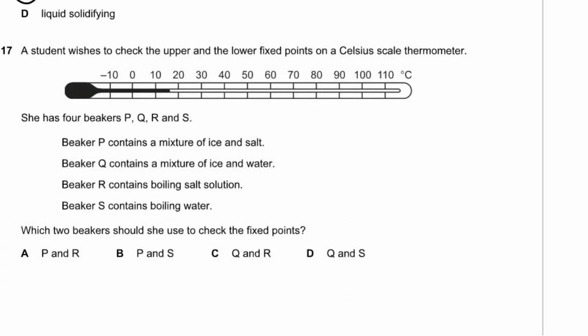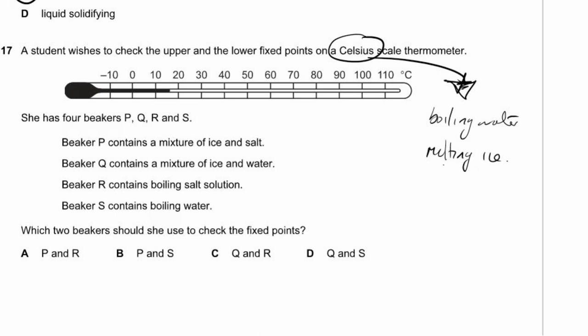Question 17. A student checks the fixed points of a thermometer using four beakers. The Celsius scale is defined by two fixed points: boiling water and melting ice. Beaker Q contains ice and water (melting ice), and Beaker S contains boiling water. She should use Q and S, which is option D.